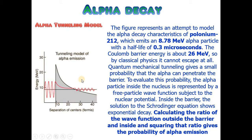The Coulomb barrier energy is about 26 mega electron volts, so by classical physics the alpha particle can't escape at all. Quantum mechanical tunneling gives a small probability that the alpha can penetrate the barrier.